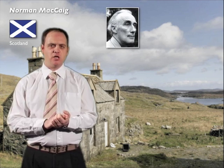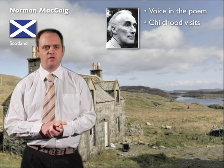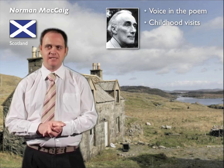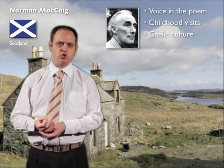Norman McCaig is a Scottish poet born in 1910. In Aunt Julia, he is the voice of the poem, and it's about his childhood visits to the north of Scotland to visit his aunt. We assume these visits took place in the late 1910s or early 1920s. The poem is also about Gaelic culture, and this is personified by his Aunt Julia in the poem.